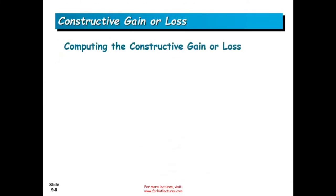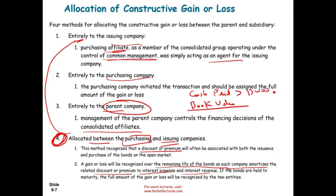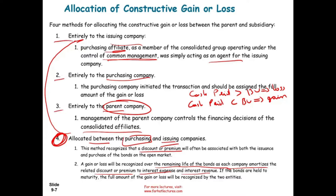How do we compute the gain or the loss? For methods one through three — dealing with one entity — we look at how much cash was paid and compare it to the book value of the bond. If we pay more than the book value, we have a loss. If cash paid is less than the book value, we have a gain. If we paid exactly the book value, we have no gain and no loss. For method four, it's a little bit different.